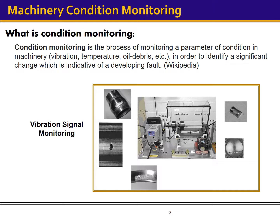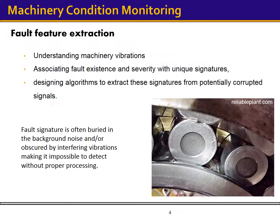Different measurements may be used for this purpose. One of the most commonly used data is the measured machinery vibrations. Gears, bearings and other machine components generate vibrations during their normal operation. These vibrations change as the system develops faults. For diagnosis, first we need to understand the nature of machinery vibrations, then we determine the vibration signatures associated with various faults. Existence and severity of these defects can then be related to the signature.